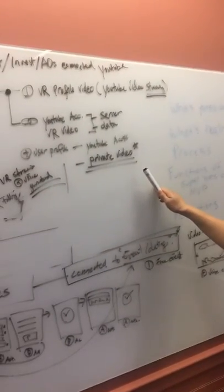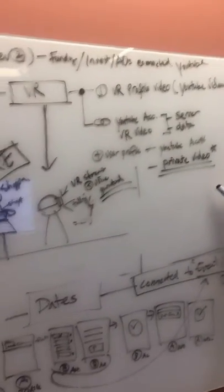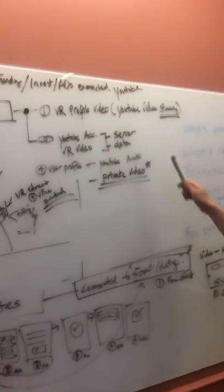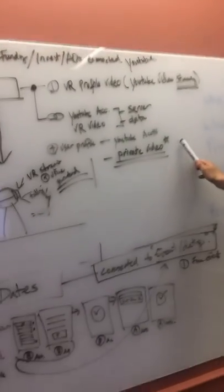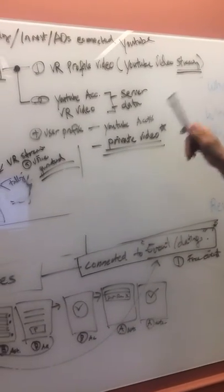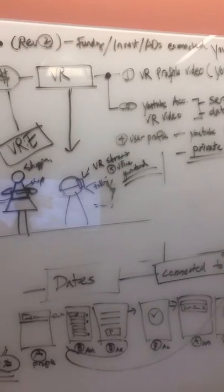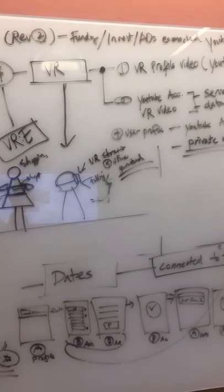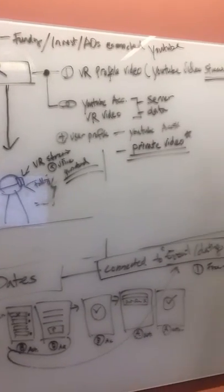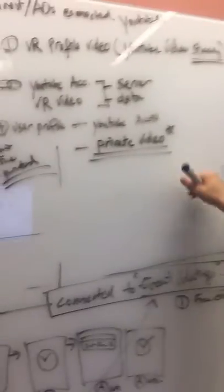To reduce the cost of development, we can use YouTube videos that are already in existence to create profile videos. Profiles will be made there, and then the user can stream their YouTube videos into our app.